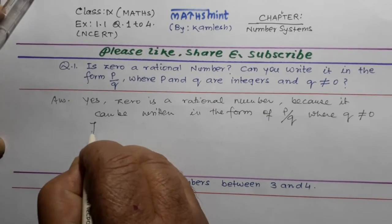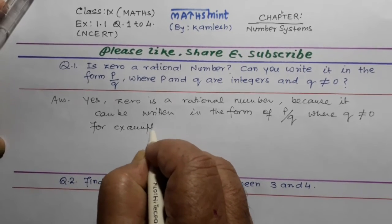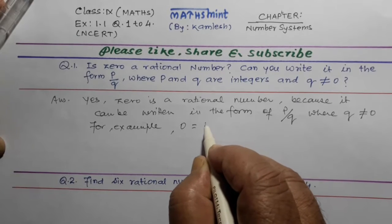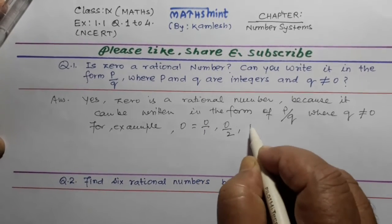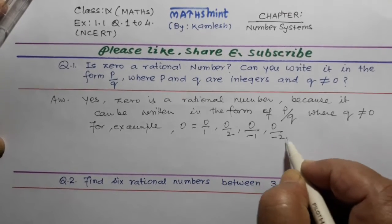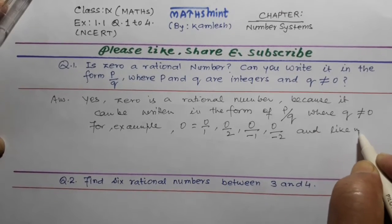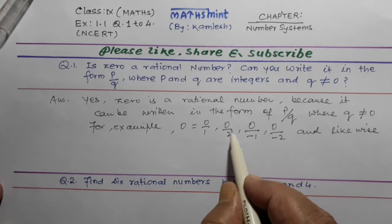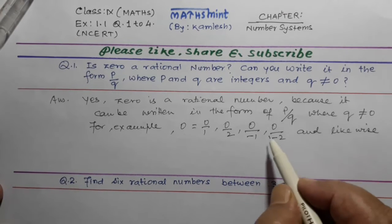For example, zero will be equal to zero by one, zero by two, zero by minus one, zero by minus two, and likewise. Zero ko ham zero by one, zero by two, zero by minus one, zero by minus two, zero by any number likh sakteh hain.